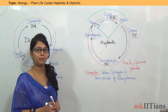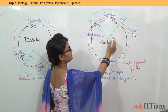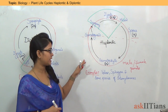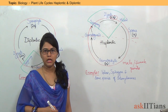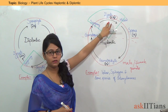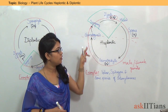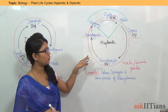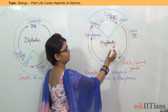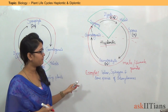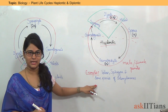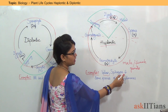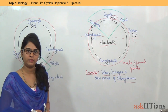Why do we call it haploidic? Because the major dominant photosynthetic phase is haploid, and the minor photosynthetic phase is diploid. So because of the major dominant photosynthetic phase being haploid, it is known as the haploidic life cycle. This life cycle is found in many algae such as Volvox, Spirogyra, and Chlamydomonas.